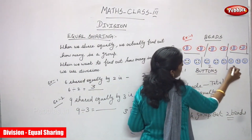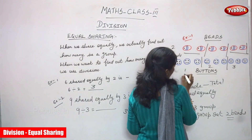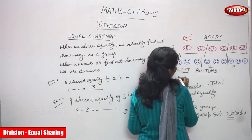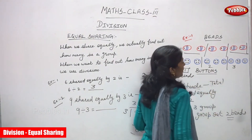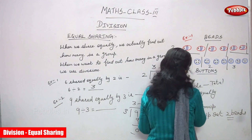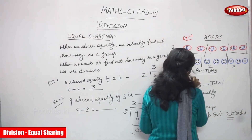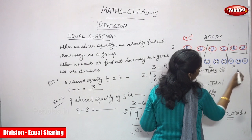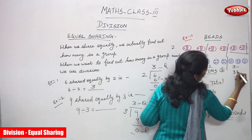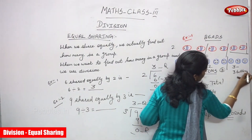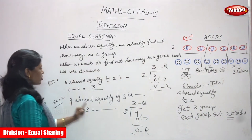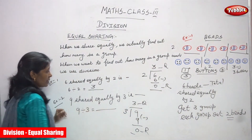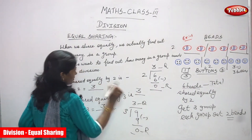1st group, 2nd group, 3rd group. In each single group — in the 1st group how many buttons? 3 buttons. 2nd group, again 3 buttons. 3rd group also 3 buttons. I think you understand very clearly. 9 shared equally by 3 — the answer is 3.